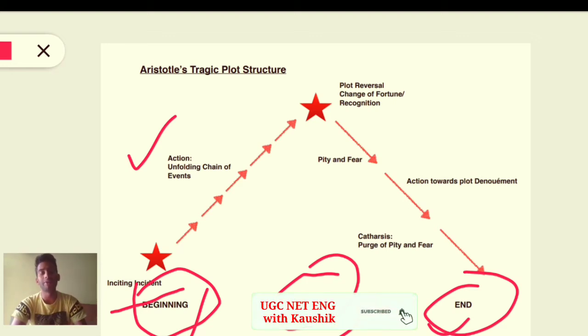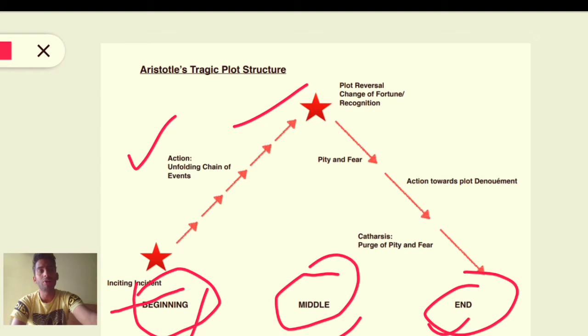Later we will come to the middle part, or you can say the height of tragedy. From there, plot reversal happens and change of fortune is seen. This is also called recognition in tragic language. It is a term which denotes the plot reversal and change of fortune.